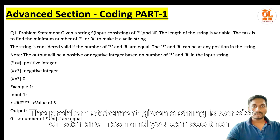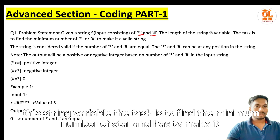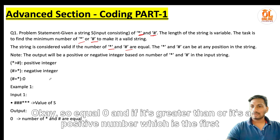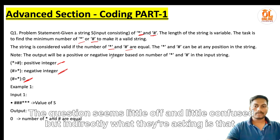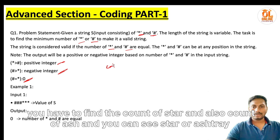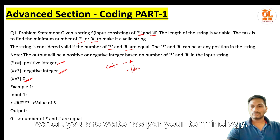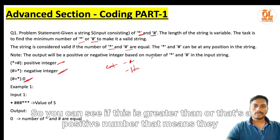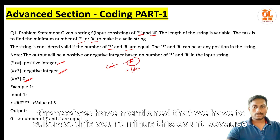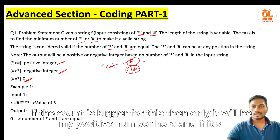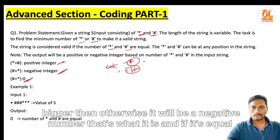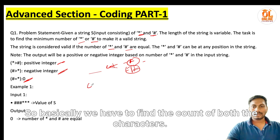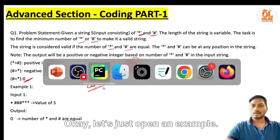The problem statement: given a string consisting of stars and hashes, find the minimum value of the string. The string value is considered as the count of stars minus the count of hashes — equal means zero, greater means positive, otherwise negative. So indirectly, what they're asking is to find the count of stars and the count of hashes.